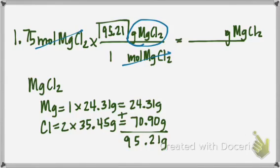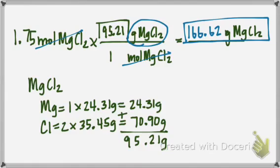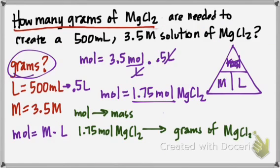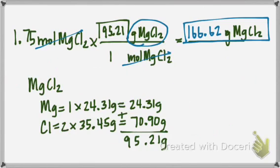Once I do my math, I should get 166.62 grams of magnesium chloride. So then I need to go back and just double check. Did I answer what the question asked? How many grams of magnesium chloride are needed? Well, that's what I have. So my final answer is 162.62 grams of magnesium chloride. Well, I hope you guys have a great day.